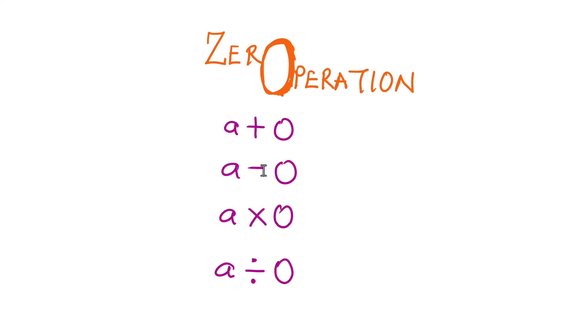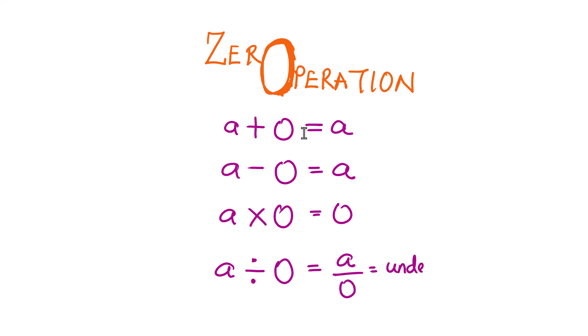On the number line we see a couple of results: a plus zero gives us a, a minus zero gives us a, a times zero gives us zero, and a divided by zero — which can also be written as a over zero — is undefined. This is really fascinating because many students misunderstand what this means in terms of how the placement works.